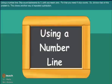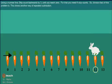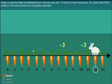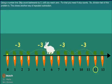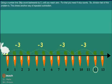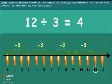Using a number line: skip count backwards by 3 until you reach 0. For that, you need 4 skip counts. So the division fact of this problem shows another way of representing repeated subtraction.